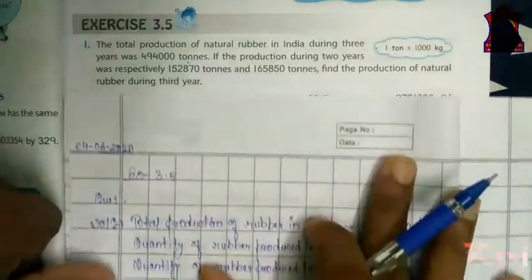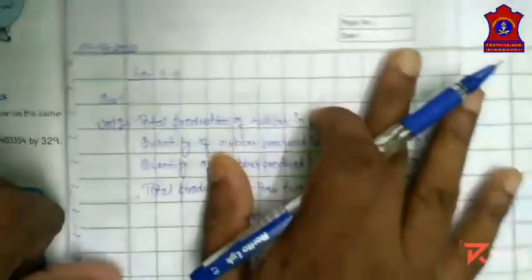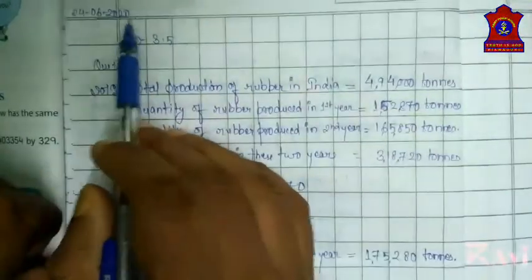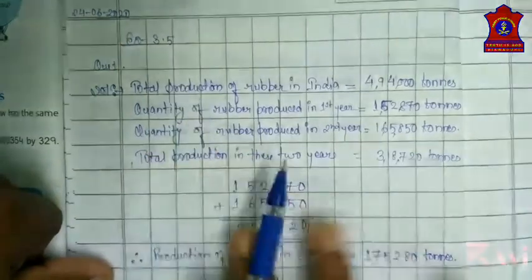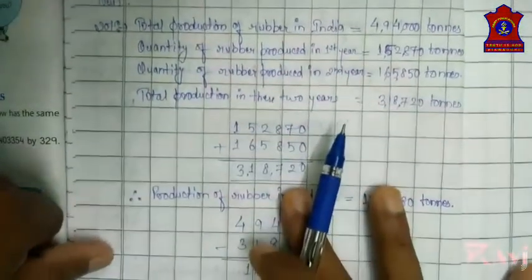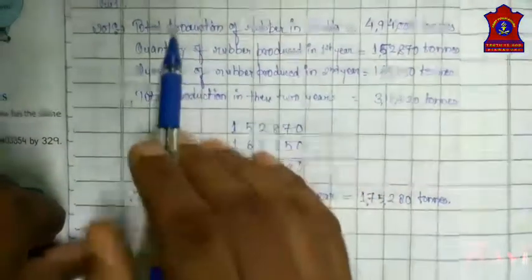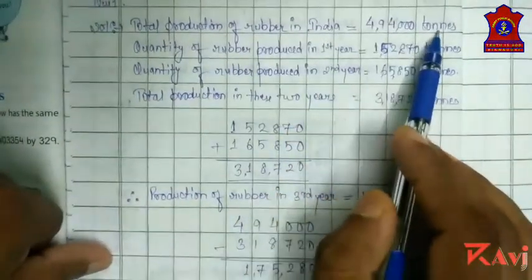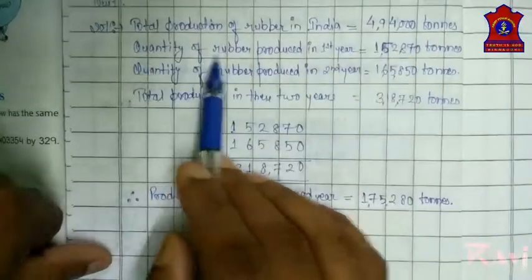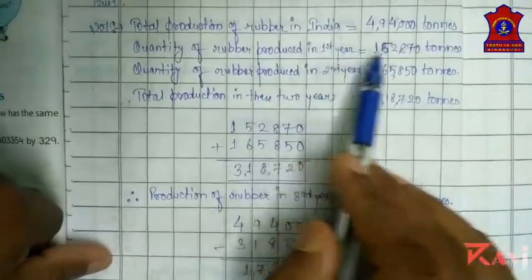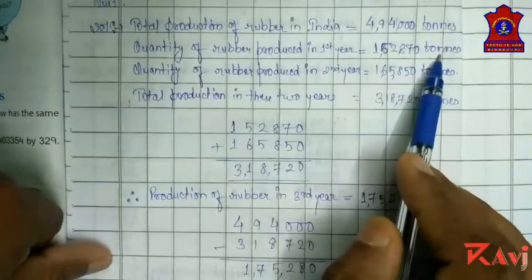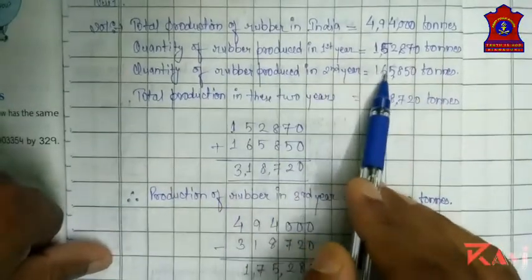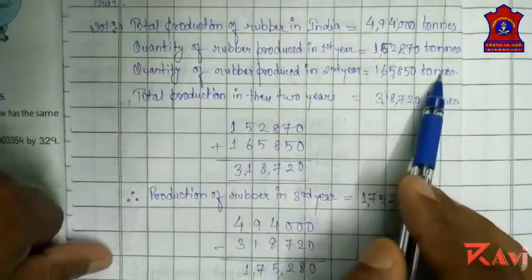See, the question is already solved for you. Exercise 3.5 question number one. Total production of rubber in India is four lakh ninety-four thousand tons. Quantity of rubber produced in first year is one lakh fifty-two thousand eight hundred and seventy tons. Quantity of rubber produced in second year equals one lakh sixty-five thousand eight hundred and fifty tons.